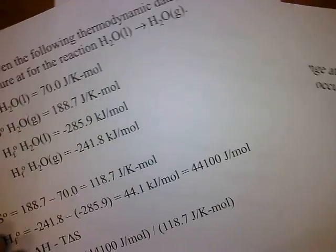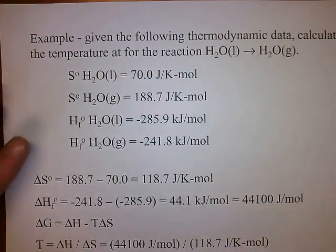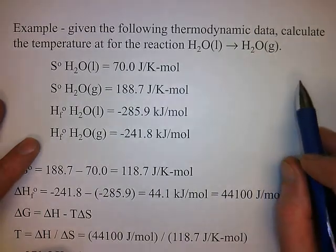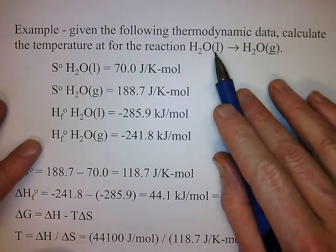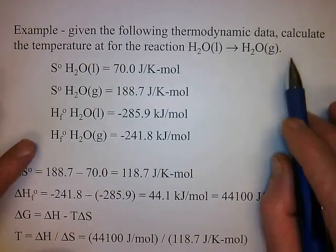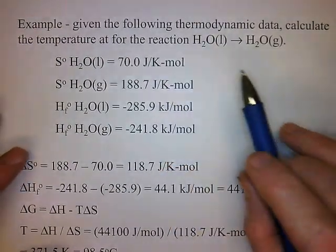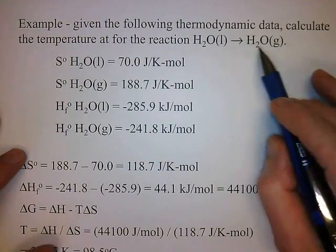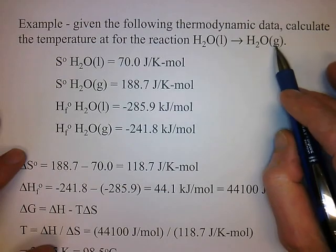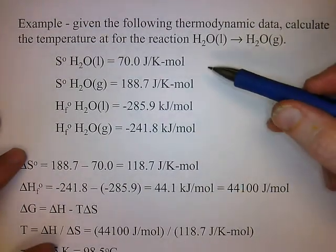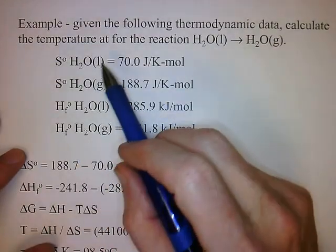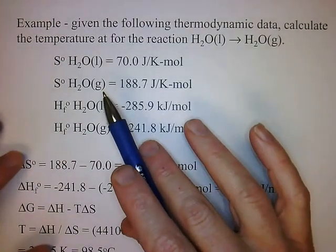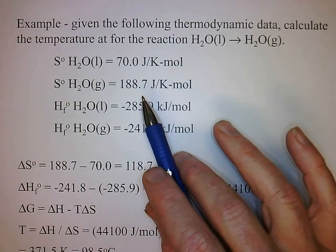Let's do a calculation — not for freezing or melting, but boiling. We're going to look up some thermodynamic data and calculate the temperature for the reaction: liquid water makes gaseous water, in other words, boiling. We look up some entropy values: for liquid water it's 70 joules per kelvin mole, and for gaseous water it's 188.7. Our heats of formation: for liquid water it's −285.9, and for gaseous water it's −241.8.